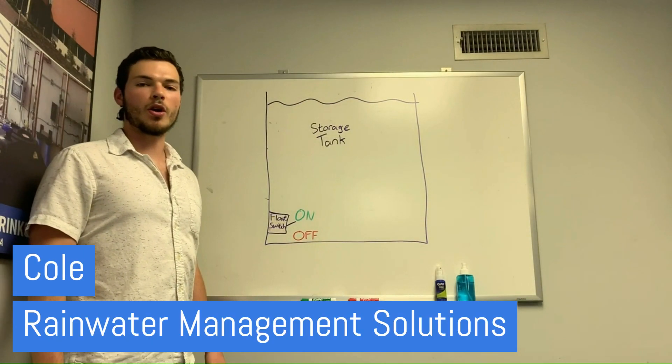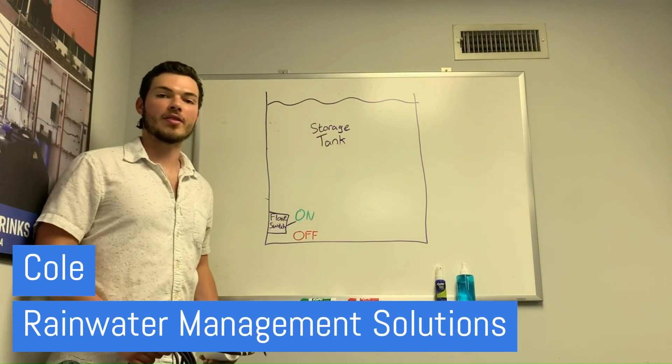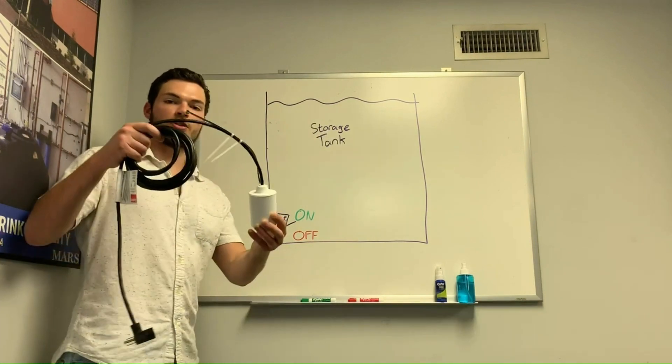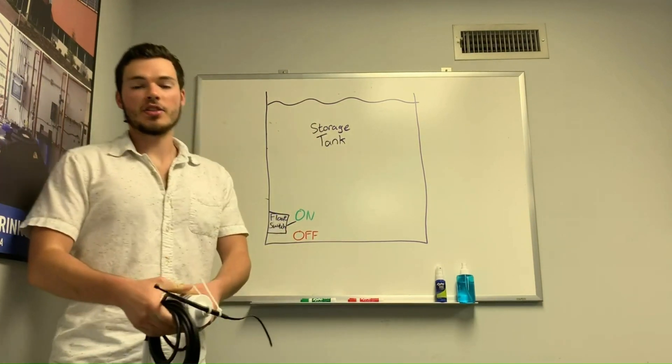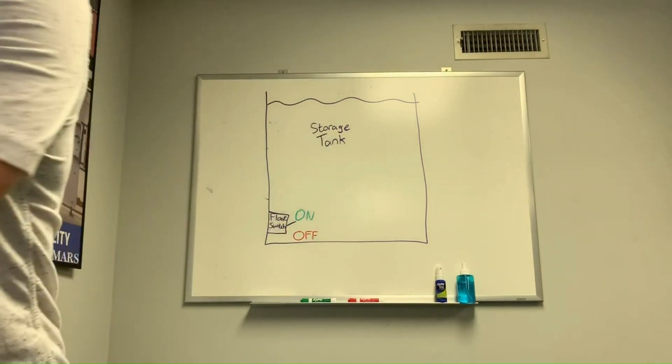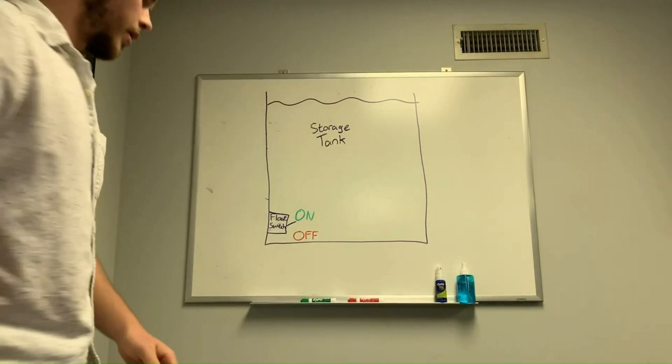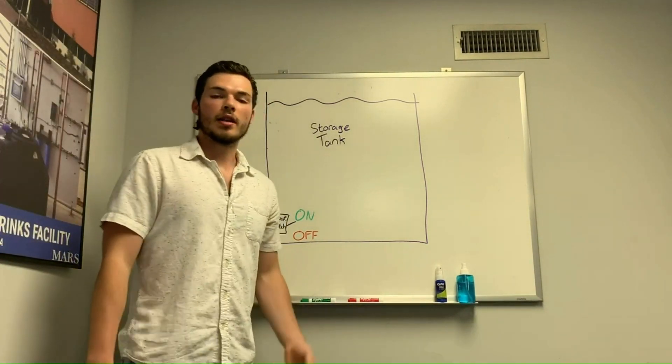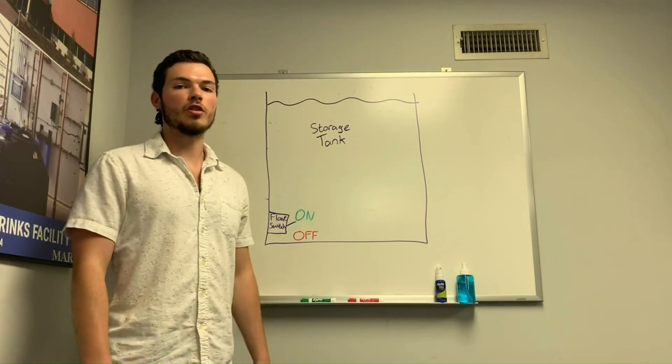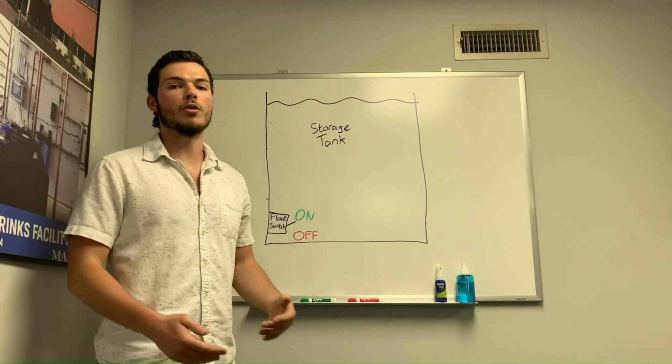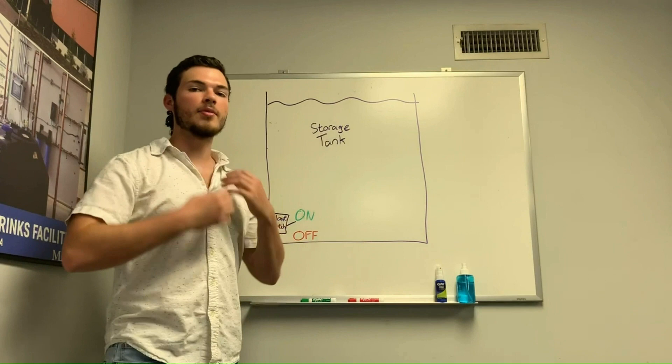Hey everyone, Cole with Rainwater Management Solutions here to talk about our float switches. Here's what they look like - essentially floats which sit inside your tank and serve as a sensor of water level. Depending on the water level, they will send messages to your pump to either turn on or off. There are two types of float switches.